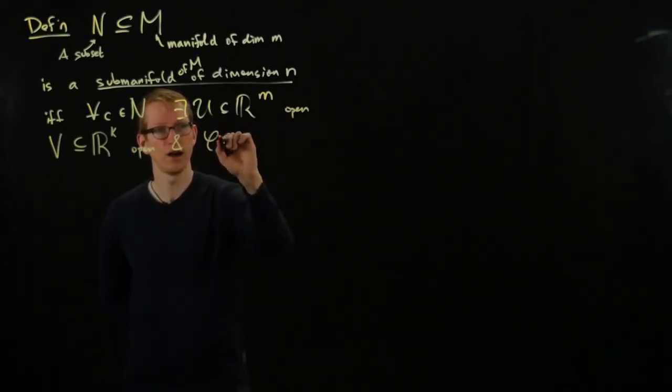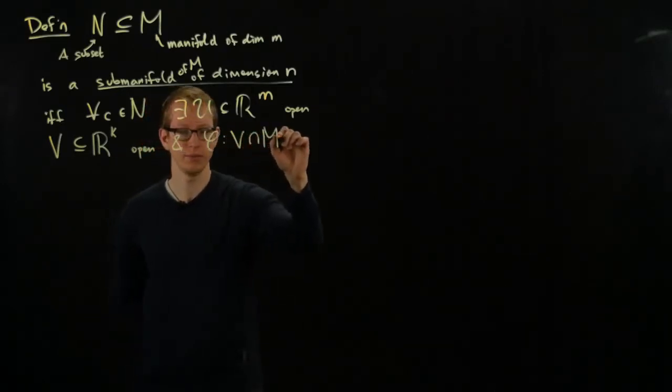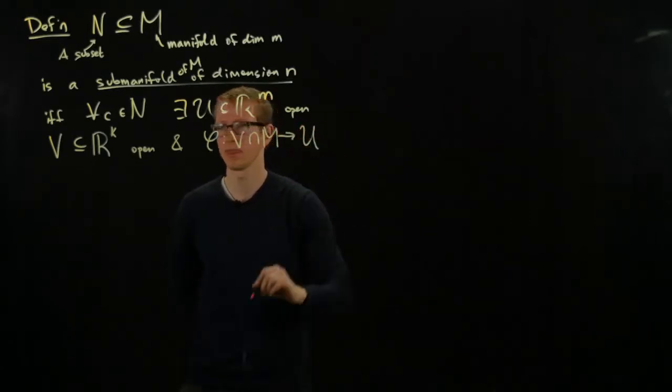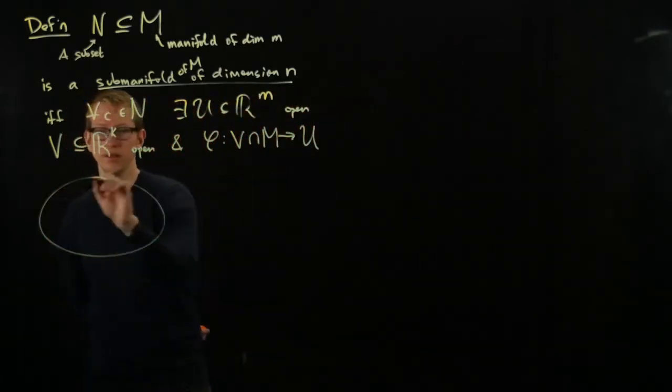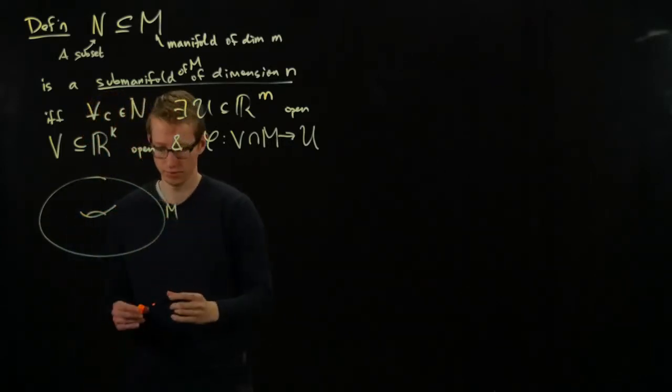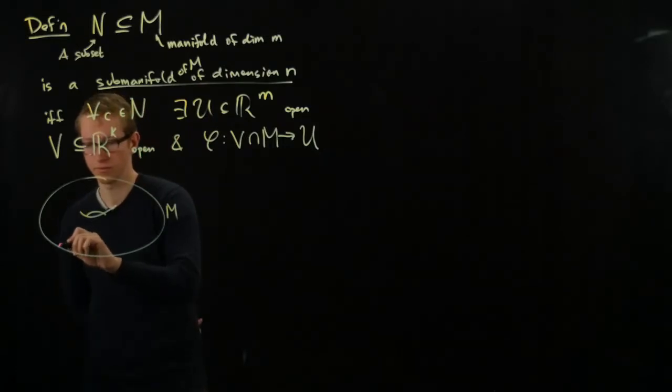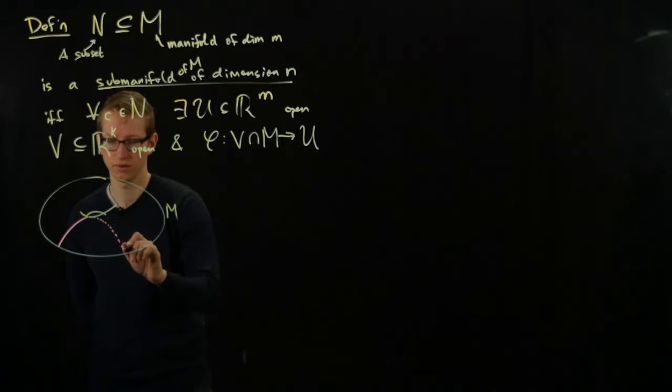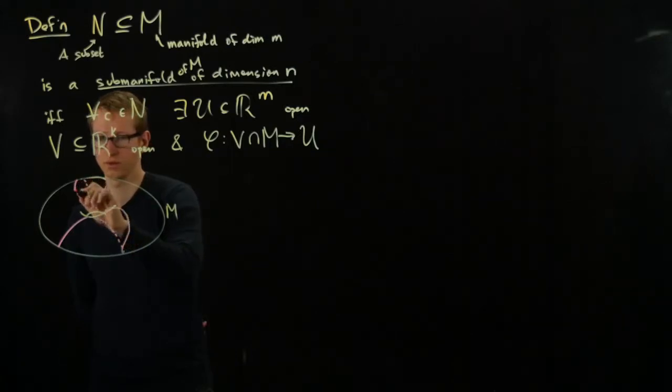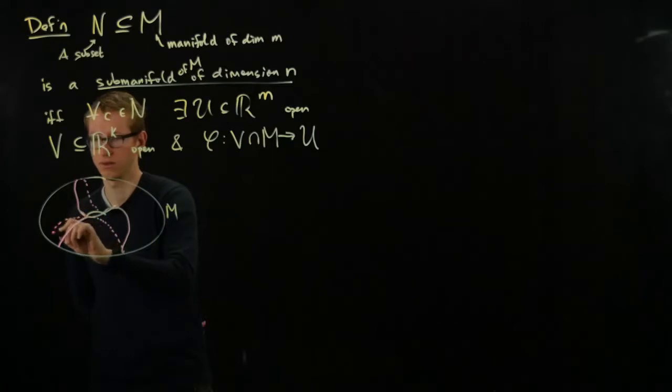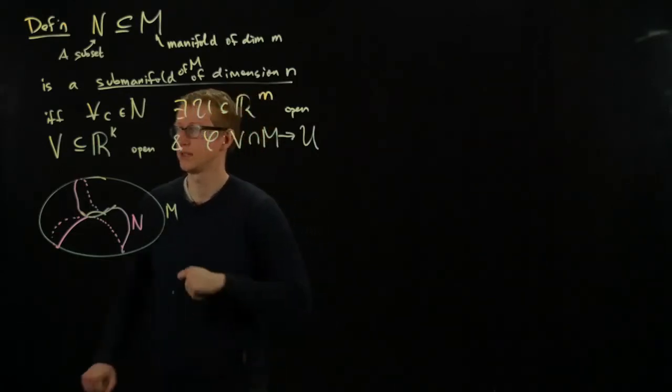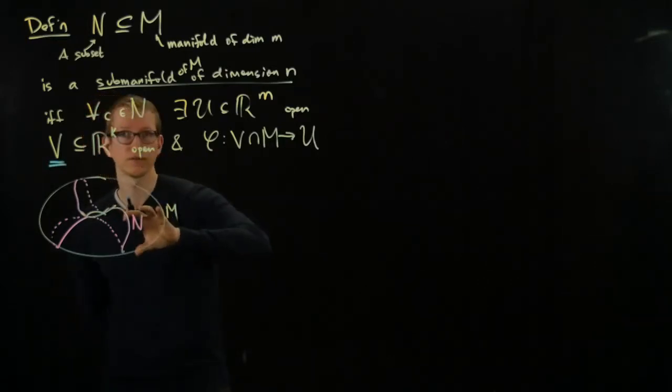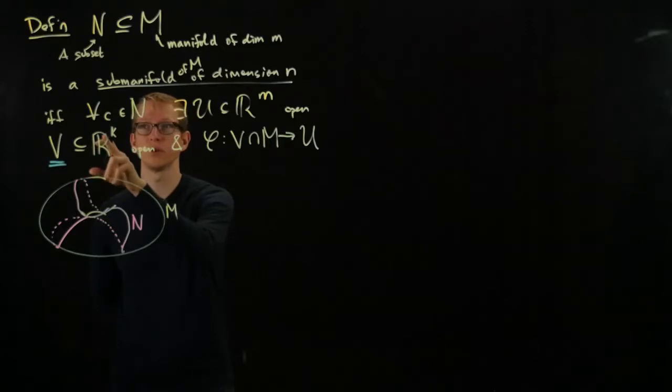And a diffeomorphism from V intersect M to U, satisfying a particular condition. And rather than writing that down precisely, let me draw a picture using an example. If I had a torus like this, so here's our manifold M. And let's look at the following lower dimensional manifold in M. Let's say it's just some curve that goes around. These are open neighborhoods of C.